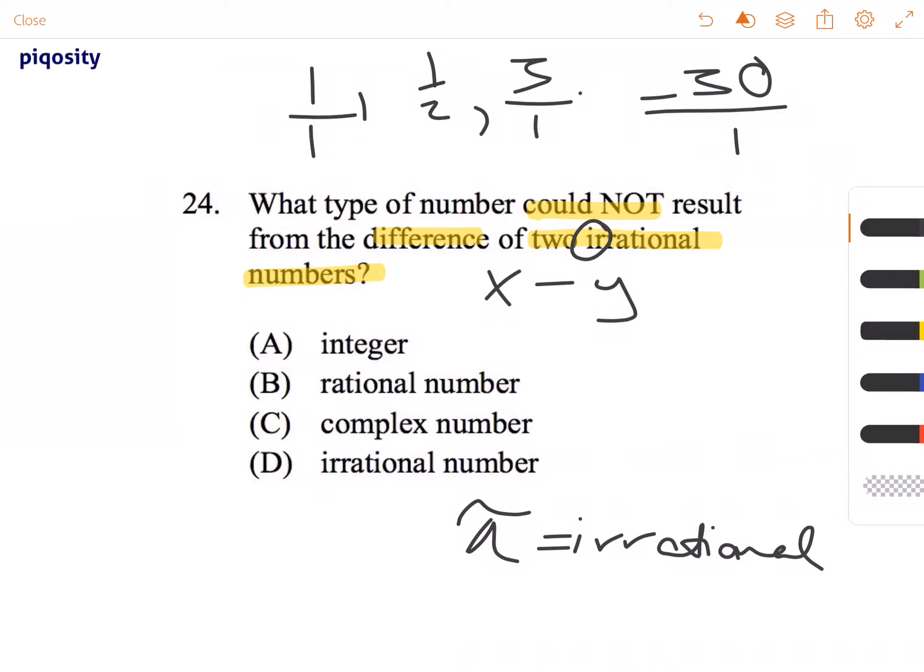Let's look at our answer choices. Answer choice A is referring to an integer. An integer is all positive and negative numbers including 0 that are not decimals, such as negative 5, 0, and 5. Those are integers.